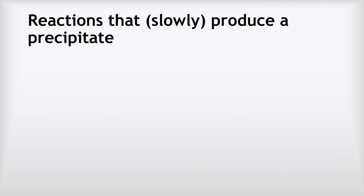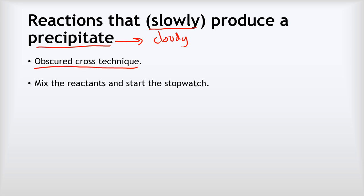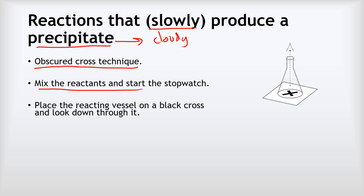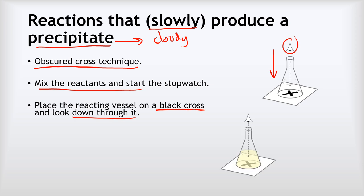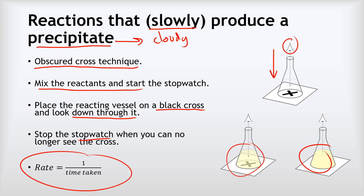What about reactions that slowly produce a precipitate — where the reaction goes cloudy? Some reactions do this very fast so this method won't work for them, but for ones that slowly produce a precipitate we can use what we call the obscured cross technique. First, we mix our reactants and start the stopwatch. Then we place the reacting vessel on top of a black cross drawn on paper and look down through it. Over time the reaction mixture will start to get cloudy, and eventually it gets so cloudy that we can no longer see the black cross — that's when we stop the stopwatch. To find the rate of the reaction, we calculate 1 divided by the time the reaction took.